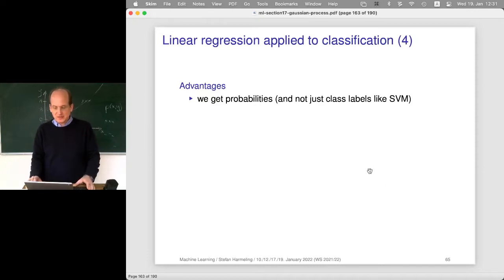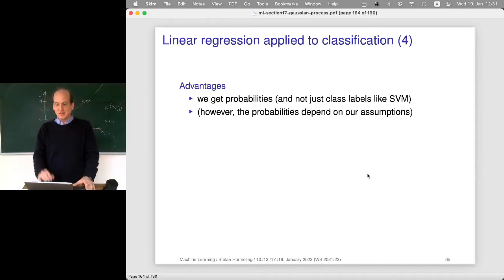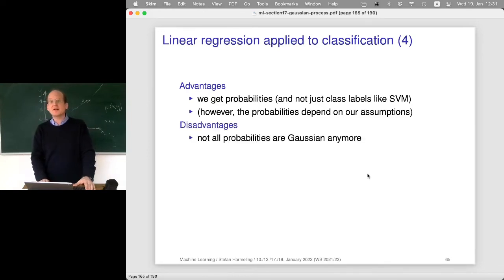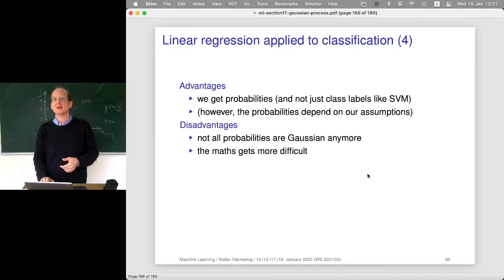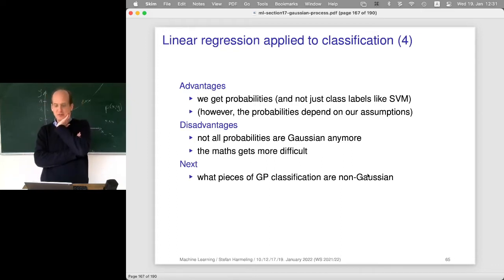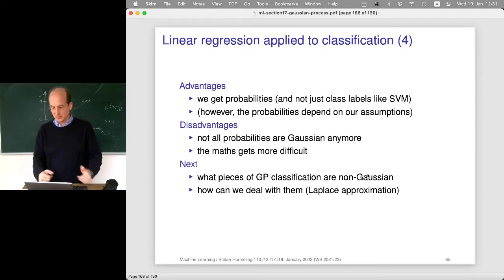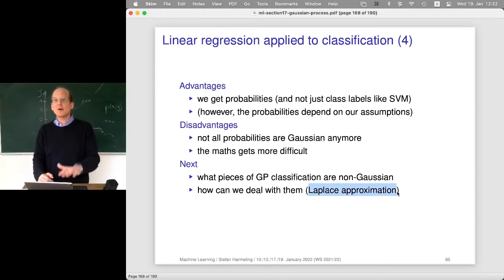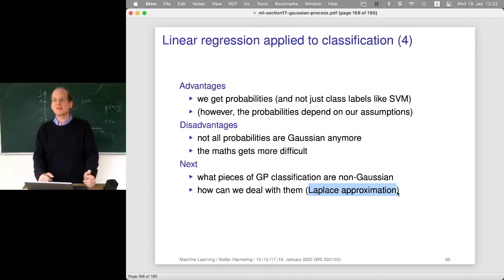The advantage of doing this is that we get probabilities, unlike other classical methods. However, there are assumptions you always pay for with these additional nice outputs. The disadvantage is the math is no longer Gaussian — it gets a bit more difficult and you have to learn about Laplace approximation to really solve it. Laplace approximation is a general tool to approximate an arbitrary distribution with a Gaussian distribution — not only for GP classification, but in general.